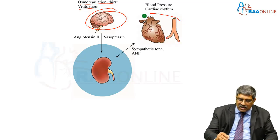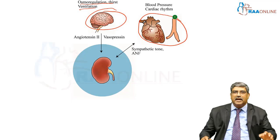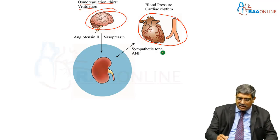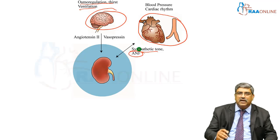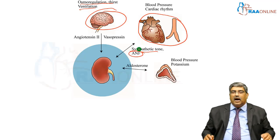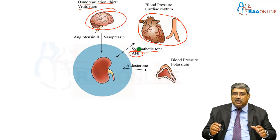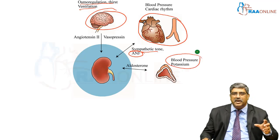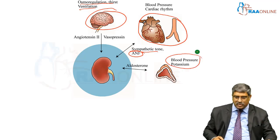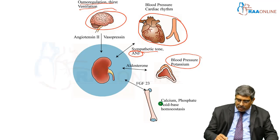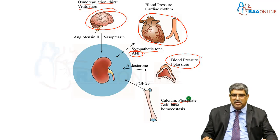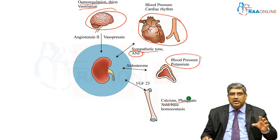With the heart and vascular system, there can be alteration in blood pressure and cardiac rhythm, which is mediated by the sympathetic system and atrial natriuretic factor. With the adrenal medulla, it can alter blood pressure and potassium, mediated by aldosterone. Through bone, calcium, phosphate, and acid-base homeostasis can be altered.